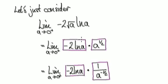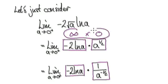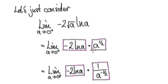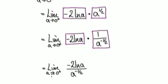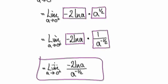We can apply L'Hôpital's rule, but first we need to rewrite this indeterminate product into quotient form. We can do that by rewriting it so that one thing is divided by another — moving one factor to the denominator. That gives us this quotient here. As `a` tends to zero, we now evaluate this — I will continue in the next video.